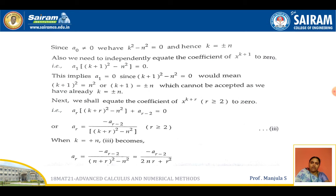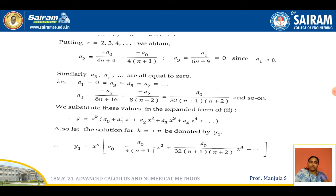Now we find the recurrence relation by equating the coefficient of x^(k+r) to 0, giving: a_r = −a_(r−2) / [(k+r)² − n²]. For the first case k = n, substituting k = n, the recurrence relation becomes a_r = −a_(r−2) / (2nr + r²). With this recurrence relation, we can find the values of a2, a4 and so on by replacing r with 2, 3, 4.